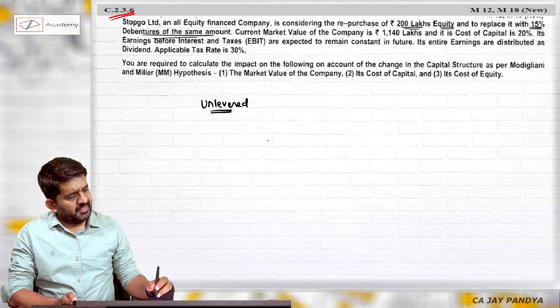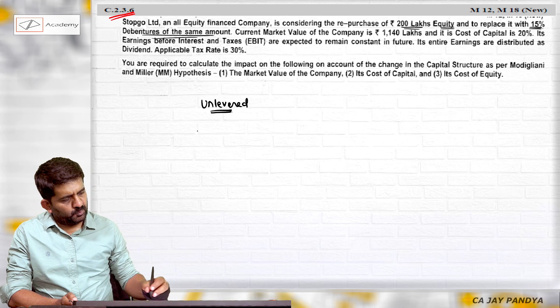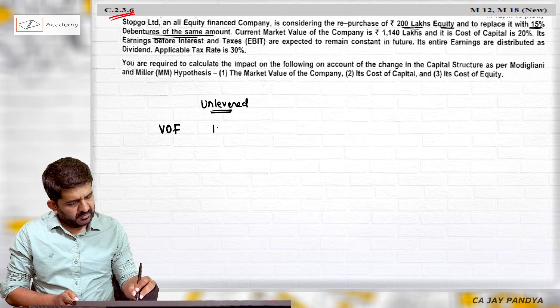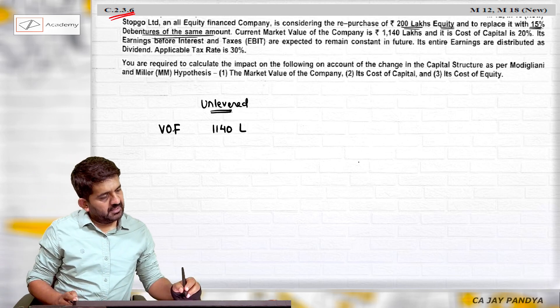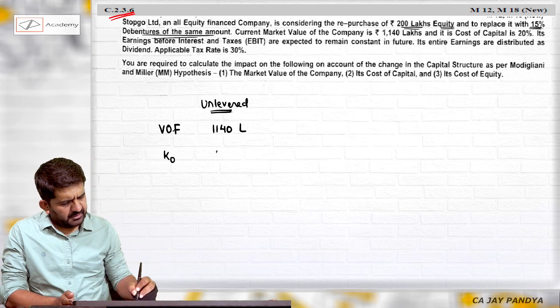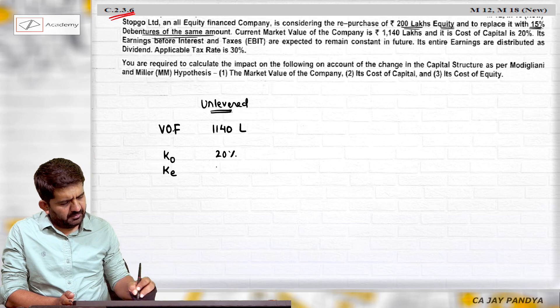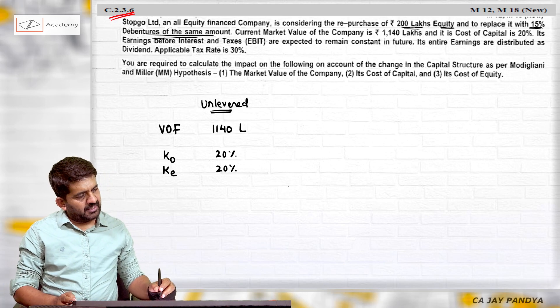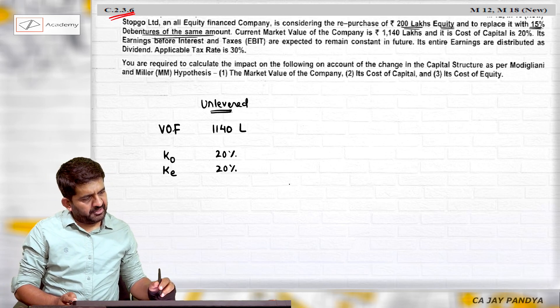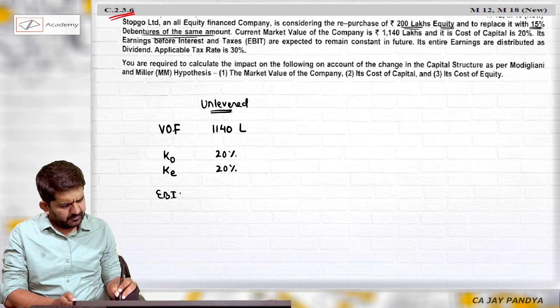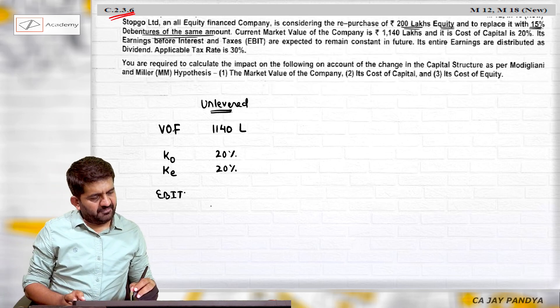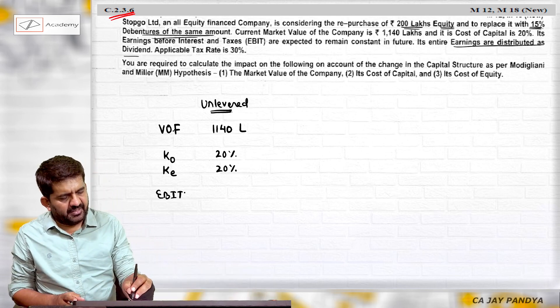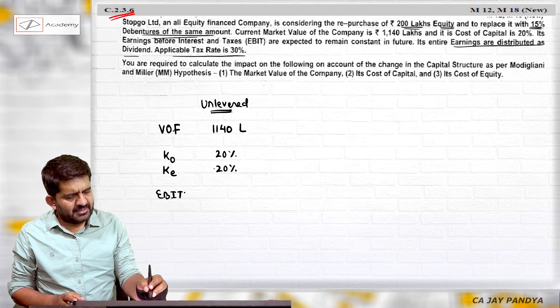And market value of the company is 1140 lakhs. Value of firm is 1140. Its cost of capital is 20 percent. So ke will be also 20 percent because there is no kd. Earning before interest and tax are expected to remain constant in the future. EBIT is not given but we can easily find out. Its entire earnings are distributed as dividend. Applicable tax rate is 30 percent.